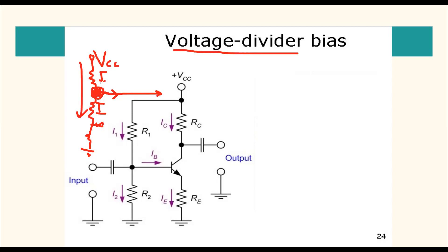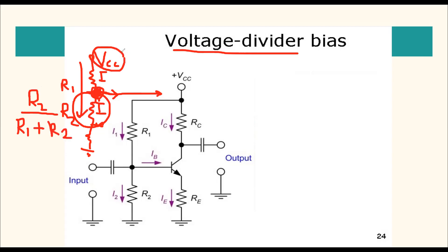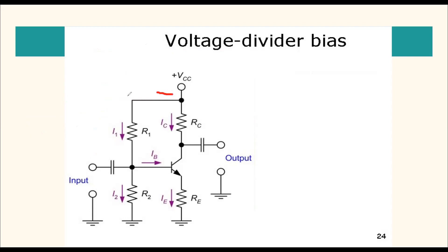The voltage divider rule says: the voltage across R2 equals R2 divided by the total resistance (R1 plus R2), multiplied by VCC. So, voltage across R2 = R2 / (R1 + R2) × VCC. This particular section is known as voltage divider bias because we have connected a voltage divider section in this circuit.